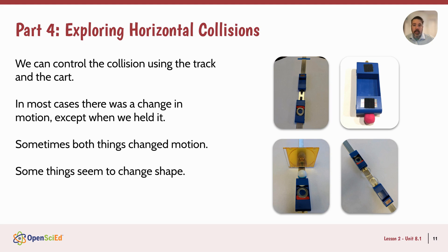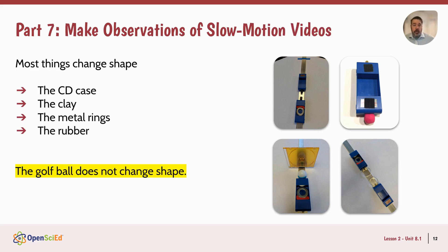They will see that things sometimes change shape, but not always, and sometimes both things could change motion. In part seven, after sharing patterns and noticings, we realize it's still happening too fast, which motivates us to watch some slow motion videos of these collisions. These are prepared and provided with YouTube links in the materials. They're going to figure out that most things change shape — the CD case, clay, metal rings, rubber — but the golf ball doesn't seem to change shape. It's okay if kids aren't totally in agreement about what changes shape and what doesn't.